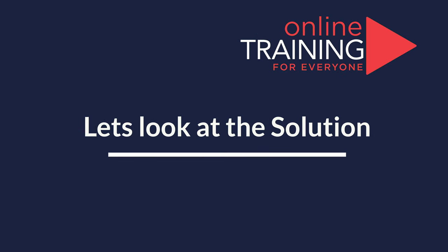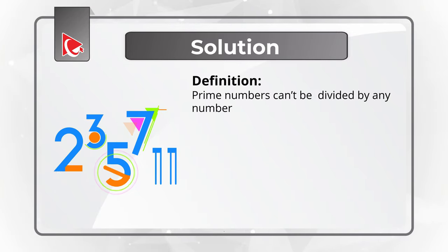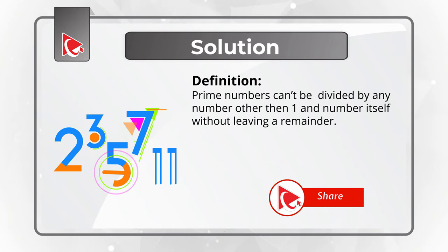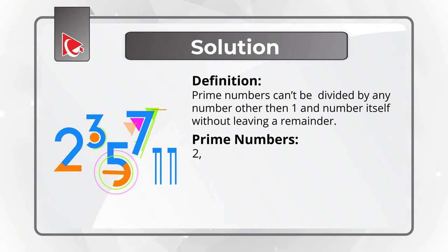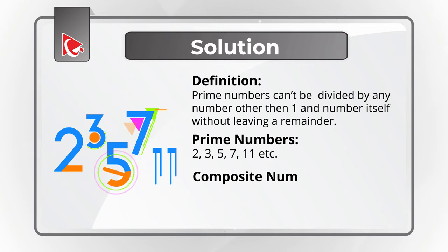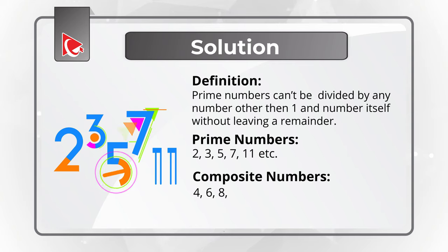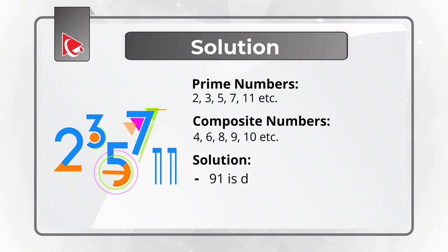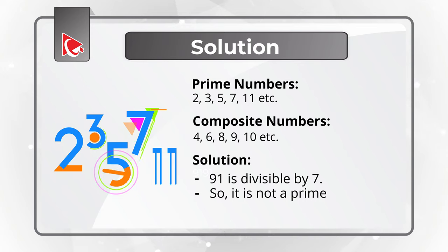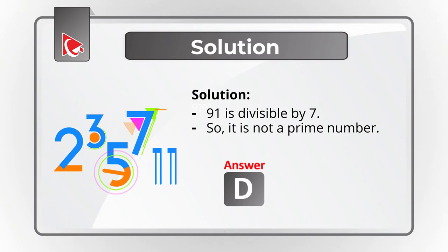Prime numbers cannot be divided by any number other than 1 and the number itself without leaving a remainder. Examples include 2, 3, 5, 7, 11. The opposite of prime numbers are composite numbers — examples: 4 (divisible by 2), 6 (divisible by 2 and 3), 8 (divisible by 2 and 4), 9, 10. Out of the numbers presented, 91 can be divided by 7. So 91 is not a prime number, which means the correct solution is choice D, 91.